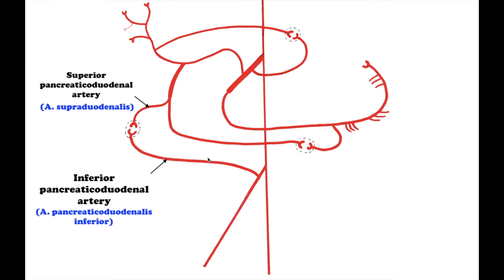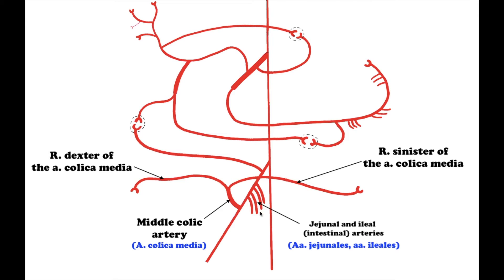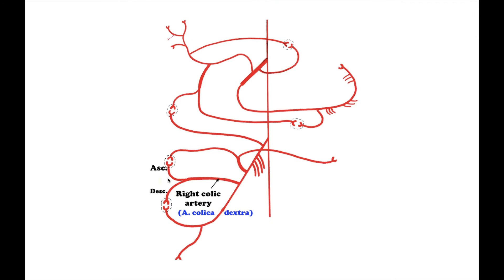Next are the intestinal arteries, 10 to 16 branches passing to the left to the jejunum and ileum. Next is the middle colic artery, arteria colica media, which divides into right and left branches. The right branch anastomoses with the right colic artery, and the left branch anastomoses with the left colic artery from the inferior mesenteric artery.